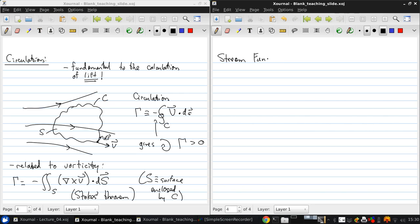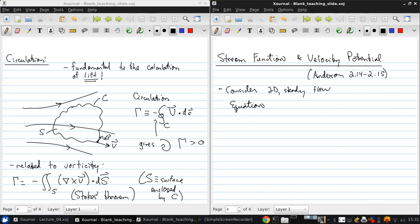These are called the stream function and the velocity potential, from which the name potential flow theory is derived. This is section 2.14 and 2.15 in your textbook. So consider a 2D steady flow. The equation for a streamline, I'll illustrate this in a moment to help you see what I mean.